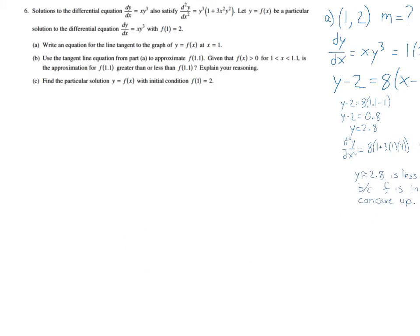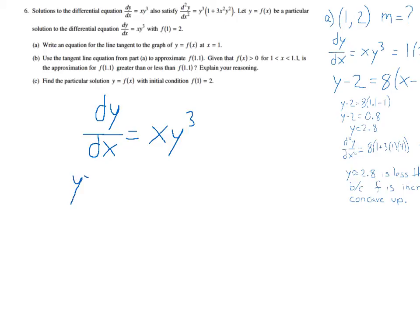So we've got A, B, and C over there. Or I'm sorry, we've got A and B over there on the right side. Now let's do part C where we have to find the particular solution. So to find the solution to the differential equation, we start with the differential equation. And the most common way that we do this in AP Calculus AB is we separate our variables. We want all the y's on the left and all the x's on the right. So I will get y to the negative third dy on the left equals x dx on the right.